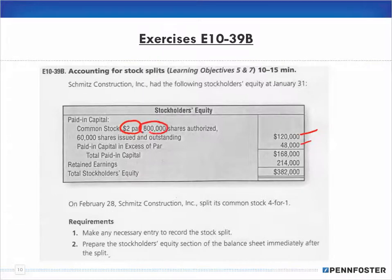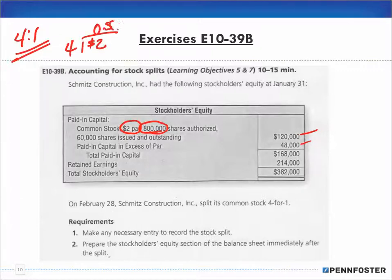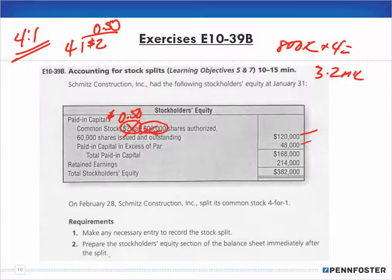For this four-for-one split, we have a $2 par and 800,000 shares. The only thing that changes on the stockholders equity is: we take the $2 par and divide it by four, so the par value becomes $0.50. And the 800,000 shares multiplied by four gives us 3.2 million shares. That is the only change made on the stockholders equity section of the balance sheet.